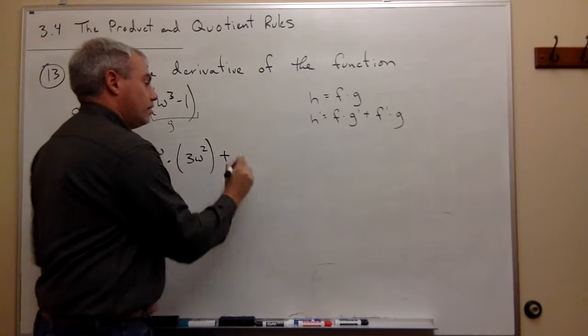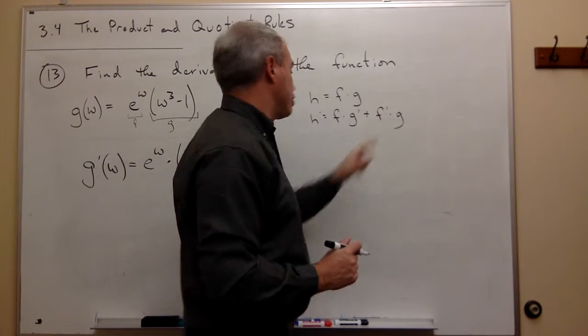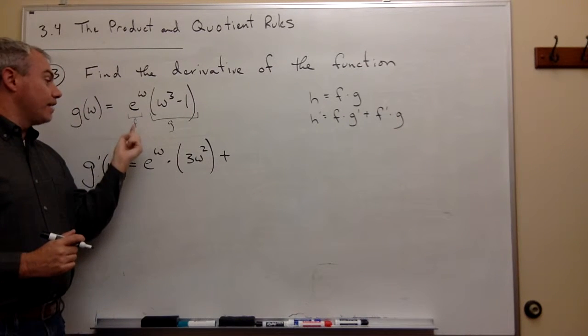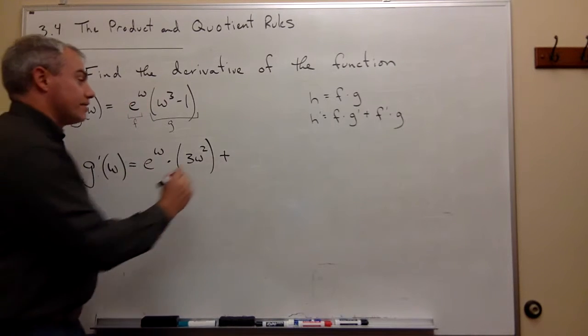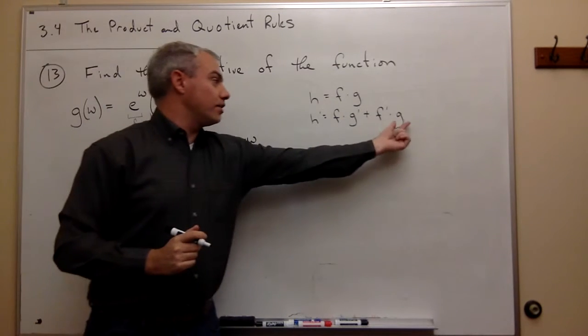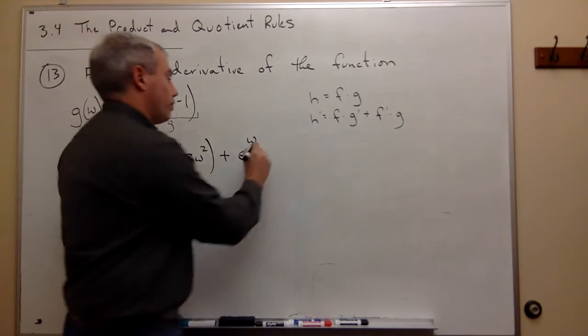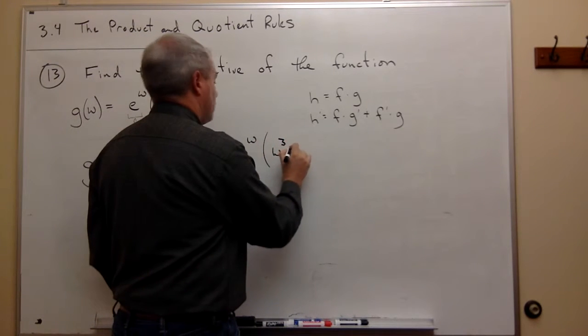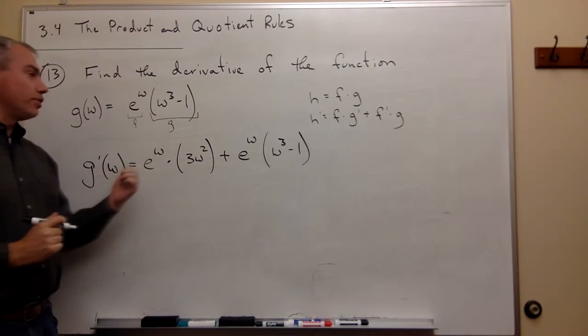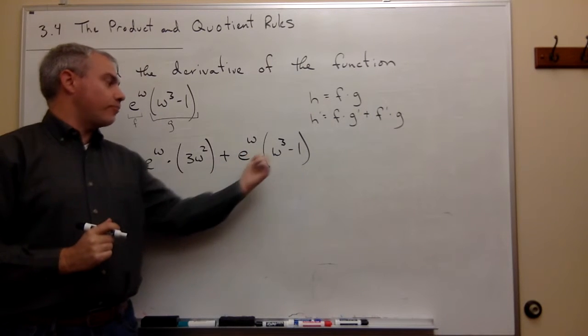Plus, so we've got f times g prime plus f prime times g. f prime is the derivative of f, and the derivative of e to the w is e to the w times g. g is w cubed minus 1. So we multiply this by w cubed minus 1, and we're done. So we have the g prime of w is f times g prime plus f prime times g.